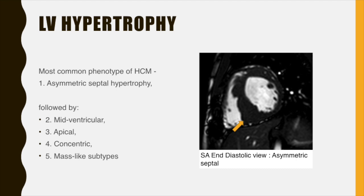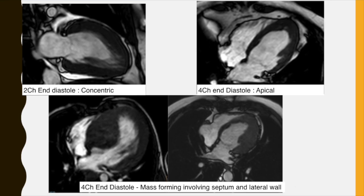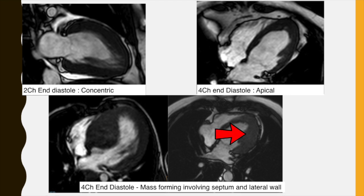Various patterns of myocardial hypertrophy can be seen in HCM. The most common phenotype of HCM is asymmetric septal hypertrophy. As in this image, we see that the basal interventricular septal segment is grossly hypertrophied as compared to the anterior or the lateral wall. Other patterns include midventricular, apical, concentric, and mass-like hypertrophy. The first image on the upper left shows concentric LV hypertrophy in the two-chamber view. The upper right shows apical hypertrophy on the four-chamber view. Lower images show a mass-forming hypertrophy involving the septum on the left image and a mass-forming hypertrophy involving the lateral wall on the right image.